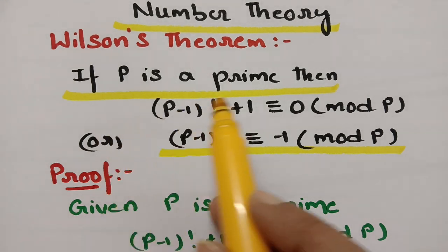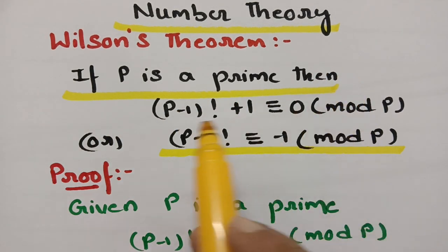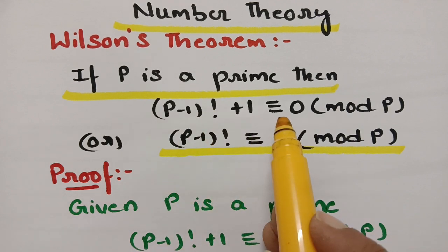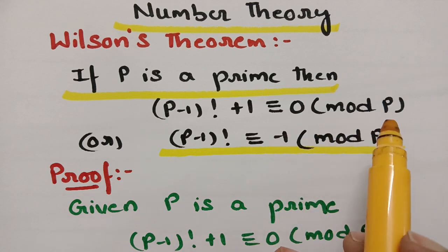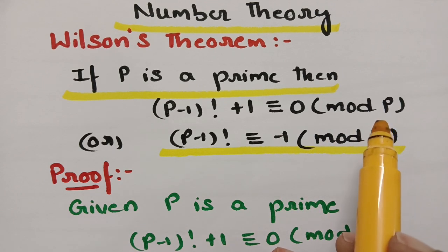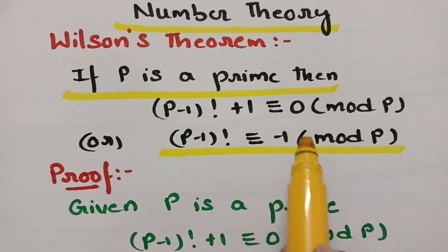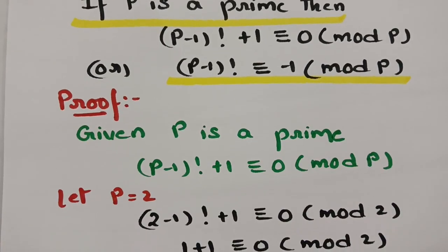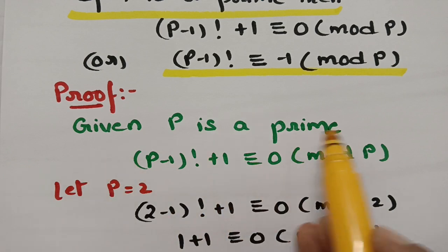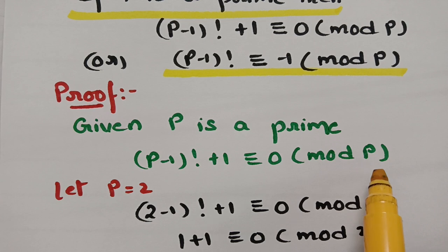If p is a prime number, we have to prove that (p−1)! + 1 is congruent to 0 mod p. Recall the congruence definition: if a ≡ b (mod m), then m divides the difference a − b. According to the proof, p is a prime number and we need to show (p−1)! + 1 ≡ 0 (mod p).